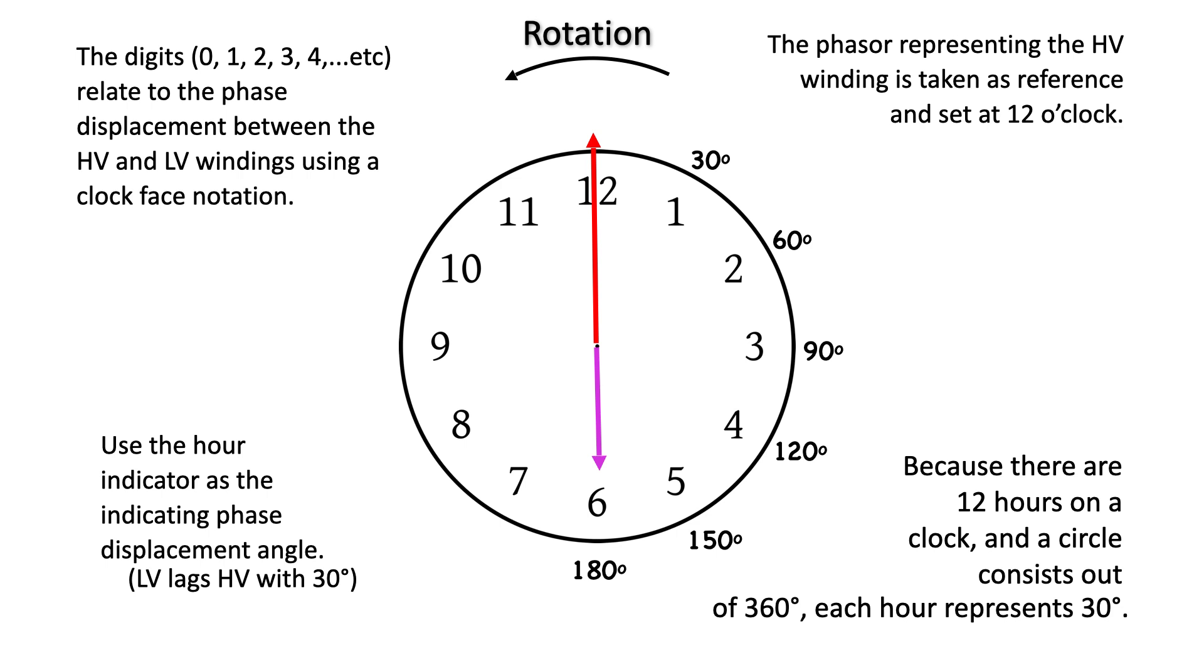7 is 210, 8 o'clock is 240, 9 o'clock is 270, 10 is 300, 11 is 330, and 360 puts us back at the 12 o'clock position. This can also be referenced as 0 degrees, so it could be 0.